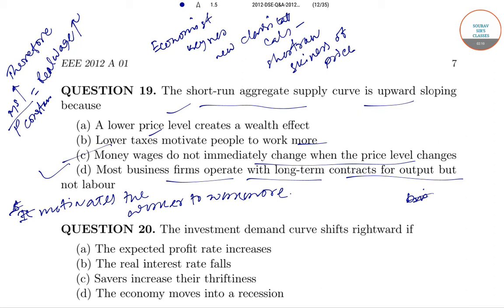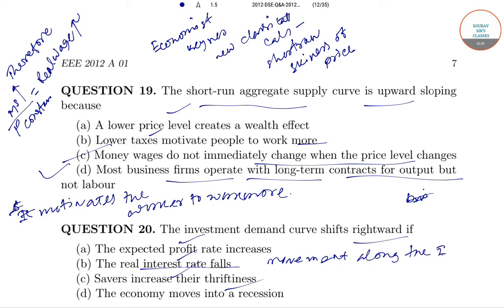The investment demand curve shifts rightward if the expected profit rate increases, the real interest rate falls, the savers increase their thriftiness, and the economy moves into recession. Now, when the real interest rate falls, it is a movement along the investment curve — so it is not a shift.